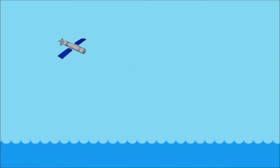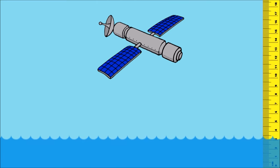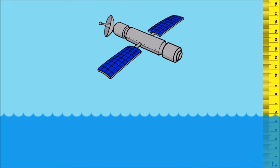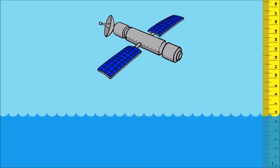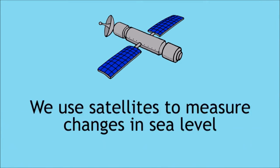Sea level. Using satellites, we are able to measure changes in sea level of just a few centimeters. Previously, with the constant movement of the waves and tides, it was difficult to measure this accurately. If you're familiar with global positioning satellites — that's GPS navigation — you will appreciate that we can make very accurate measurements using satellites.